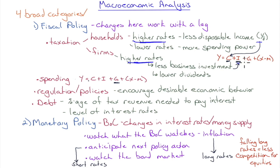Another area of macroeconomic analysis is monetary policy — the Bank of Canada's changes in interest rates and money supply. You want to watch what the Bank of Canada watches: inflation, which tends to affect long-term interest rates. You want to anticipate the next policy action — whether the Bank will raise rates, hold steady, or lower them — as this affects short rates. Watch the bond market, which is extremely interest-rate and inflation sensitive.